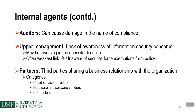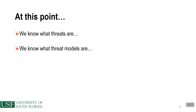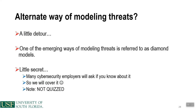Partners are third parties sharing a business relationship with the organization, including cloud service providers, hardware and software vendors, and contractors. At this point we know what threats are, what threat models are, and can now consider an emerging way to model threats called cyber threat intelligence — formally defined as identifying emerging threats or key threat actors to enable effective cybersecurity decision making. The emerging approach is called the diamond model, and many cybersecurity employers will ask if you know its components.